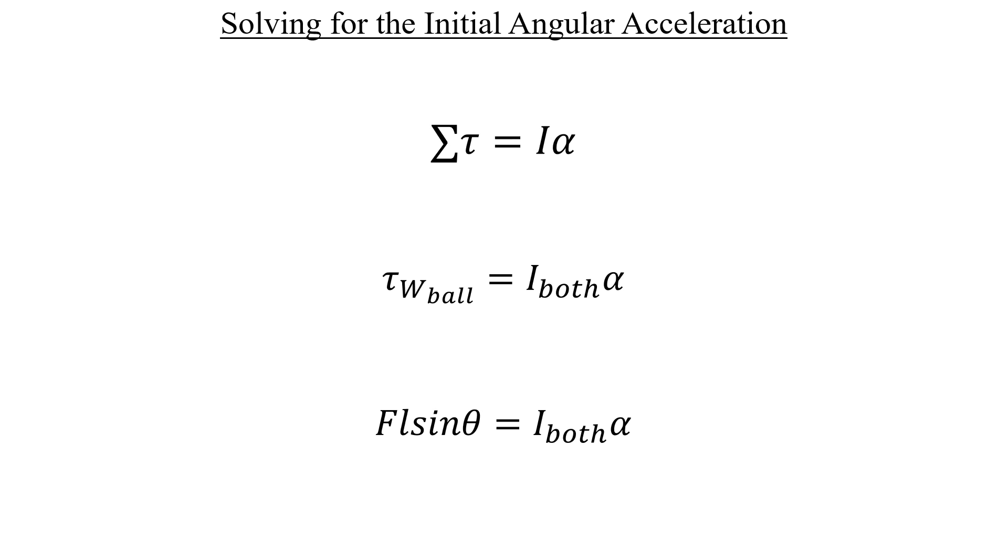F is the weight of the ball, which is minus m_ball g in this coordinate system. The lever arm is negative L over 2. And the angle between F and the lever arm is 90 degrees. And since the sine of 90 degrees just simplifies to 1, we can just drop that piece and continue with the rest of the expression on the left hand side like this.